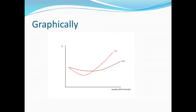Here we have the marginal cost curve in red, which starts out by dropping a bit but then starts rising. Then we have the average variable cost curve, which is typically U-shaped, and it has this very important property where its lowest point is where it crosses the marginal cost curve. If you'd like a mathematical proof for why that is, you can find one via Google. For now, you can just trust me that that is the way it's going to be.